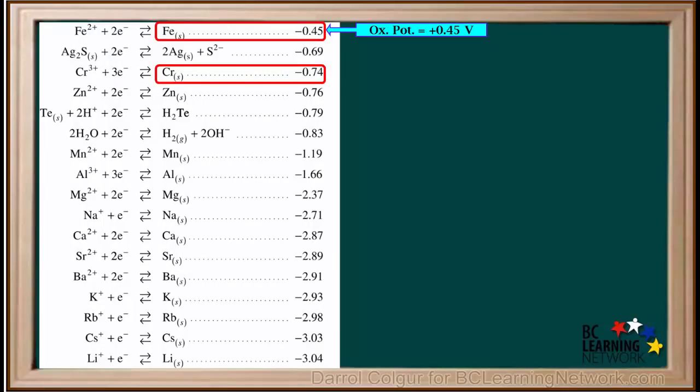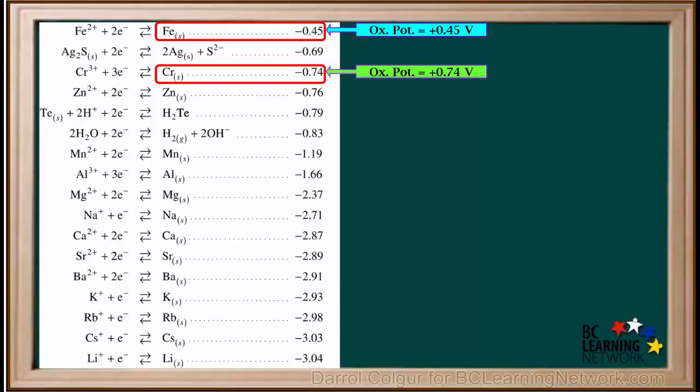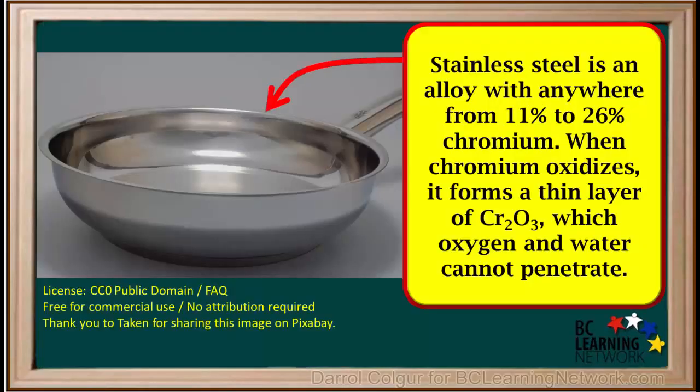We see that chromium is below iron on the right side of the reduction table. Its oxidation potential is positive 0.74 volts, which is higher than that of iron at positive 0.45 volts. So, chromium oxidizes more readily than iron. Stainless steel is an alloy containing iron, carbon and other metals, including chromium. It is at least 11% chromium and can be anywhere up to 26% chromium.